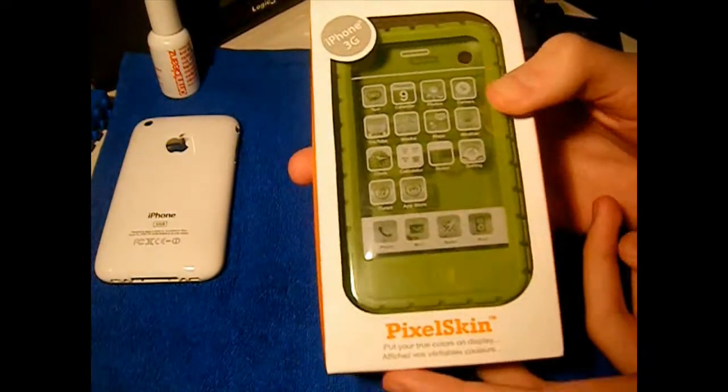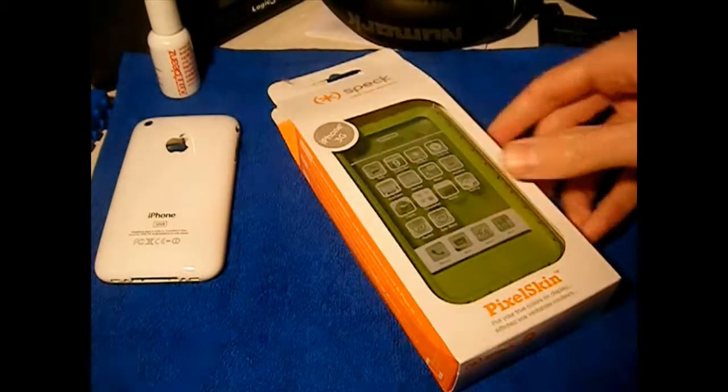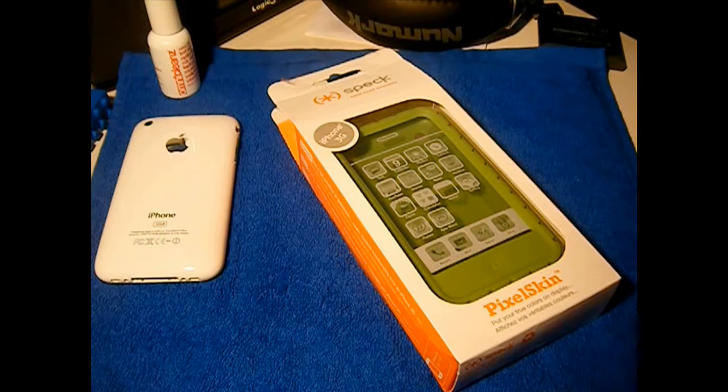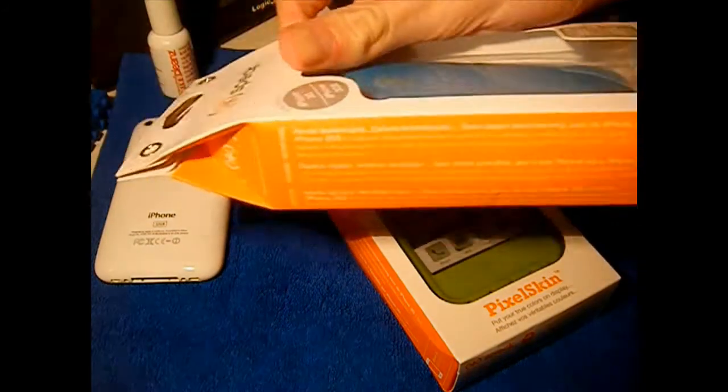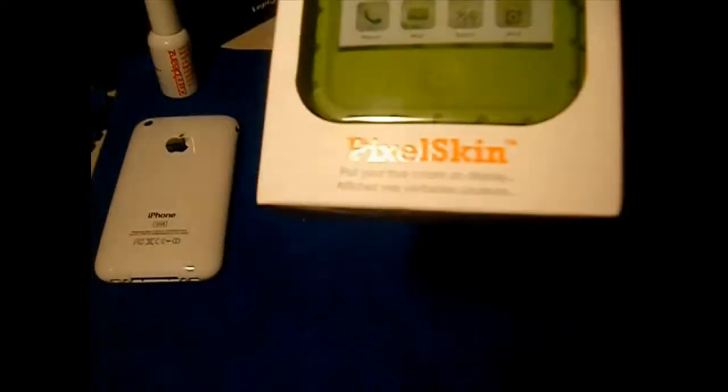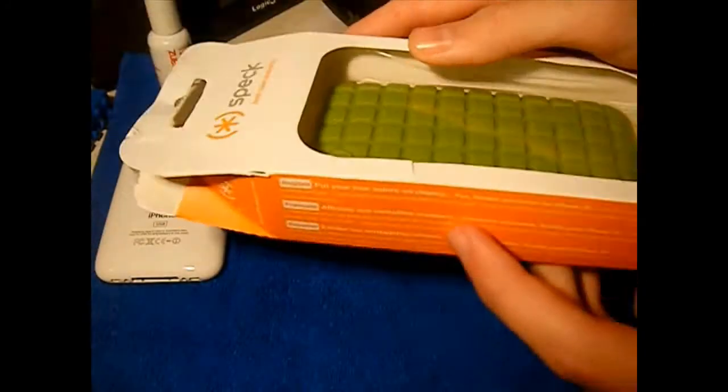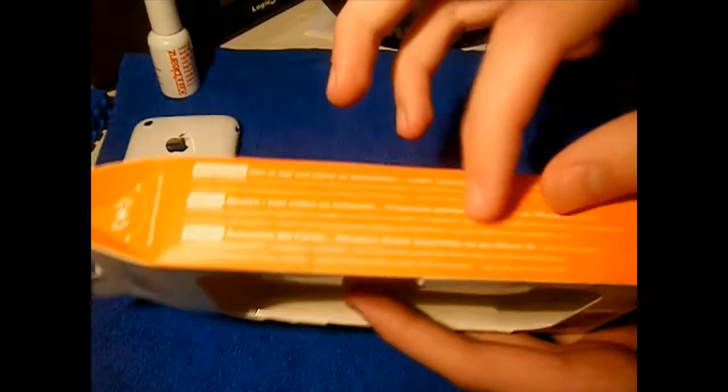The packaging is very simple, very nice though. Sticks to the same colors they always have, the orange and white, like here's another Spec product right here, same casing. It says Spec Pixel Skin down here and also says put your true colors on display. Around the side is information on the company and the case itself.